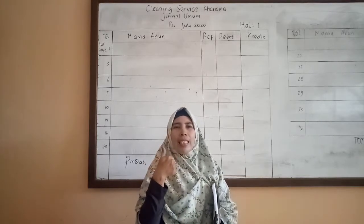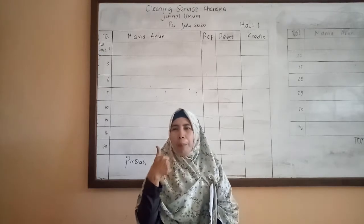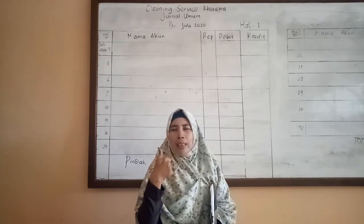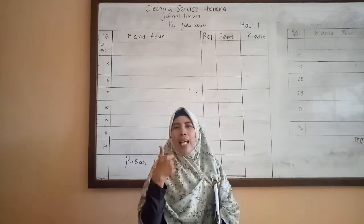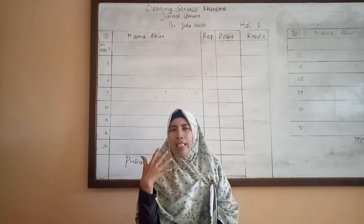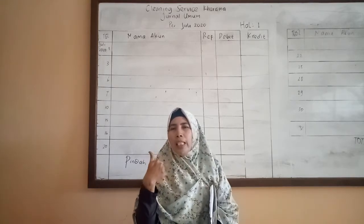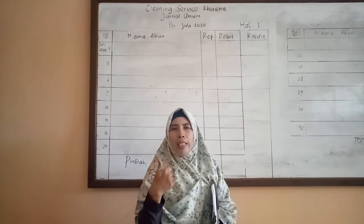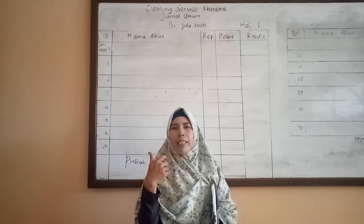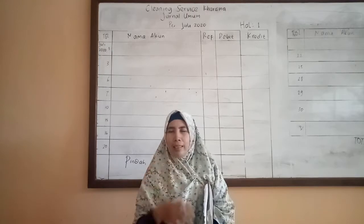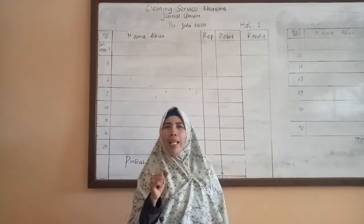Aktiva lancar terdiri dari kas, piutang, perlengkapan, persediaan, dan lain-lainnya. Kemudian aktiva tetap seperti gedung, kendaraan, mesin, dan lain-lainnya yang tidak bergerak. Contoh transaksi yang pertama: